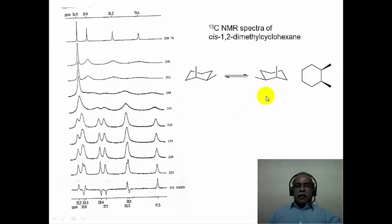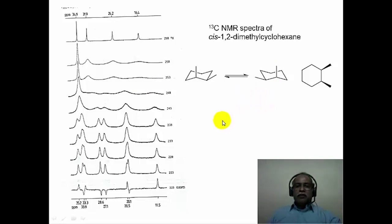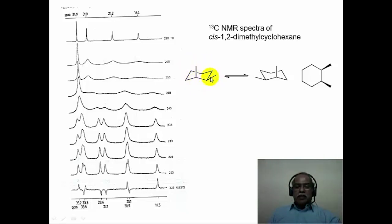Consider the carbon-13 spectroscopy of cis-1,2-dimethylcyclohexane. The cis isomer has one axial and one equatorial methyl group. This molecule is chiral with no symmetry elements, so all carbons should be chemically distinct — 6 ring carbons and 2 methyl carbons — giving 8 signals in the carbon-13 NMR spectrum. The dynamic process is the chair-to-chair interconversion, which converts one enantiomer into its antipode, a racemization process.